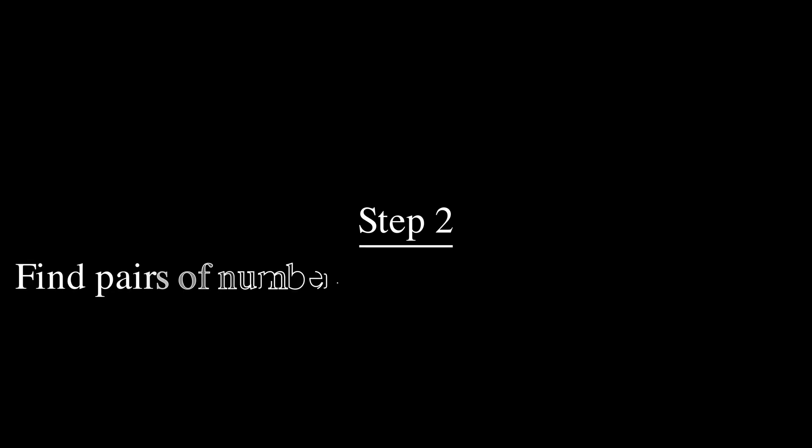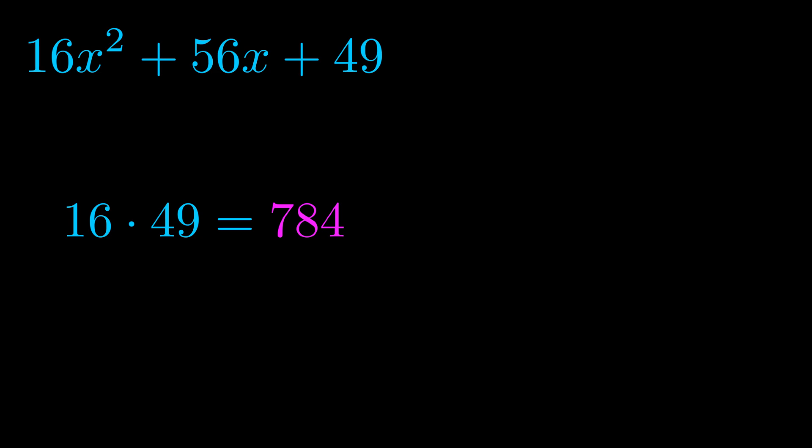Step two is to try to find all of the pairs which multiply to this number. Now it turns out you don't really need to find all of them, but go ahead and write down as many numbers as you can that multiply to the magenta value for now. Pause the video and resume when you're ready to continue. Okay, here's what I came up with.